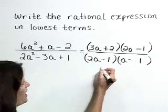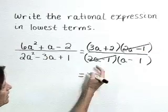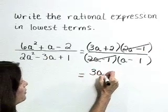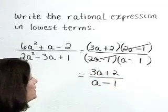Now we can cancel our common factors. 2a minus 1 in both the numerator and denominator. That gives us a result of 3a plus 2 over a minus 1 in reduced form.